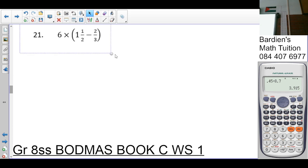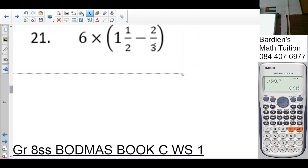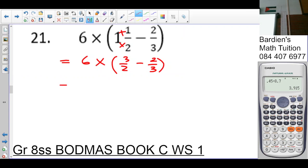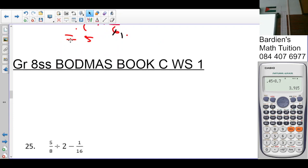Number twenty-one. What needs to be done first? Brackets. In the bracket, I need to change this to improper fractions. Six multiplied by one times two is two plus one is three over two. Minus two over. What's the LCM inside the bracket? Six. So the sum is multiplied by three. And this here by three. That's six over one. Three multiplied by three is nine minus. I could have multiplied the sixes at this point here. So six over one times, what's nine minus four? Five over six. Six goes into six one. One times five is five over one, which is five.